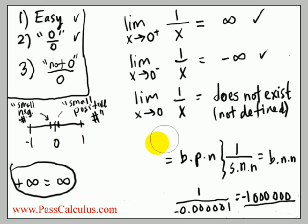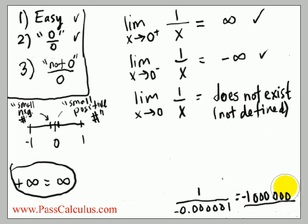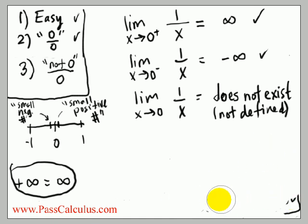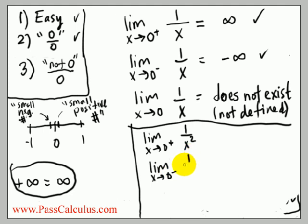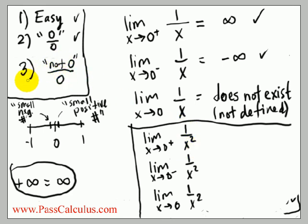Let's do another quick example to make this point more clear. We'll find: the limit as x goes to zero from the right of 1/x², the limit as x goes to zero from the left of 1/x², and the two-sided limit of 1/x². Notice when you put zero in, you get one over zero — the numerator is not zero and the denominator is zero, so we're in Type 3 for all of these.